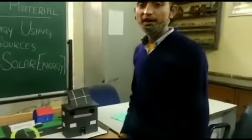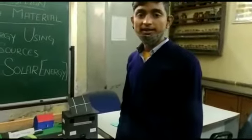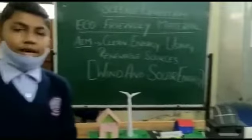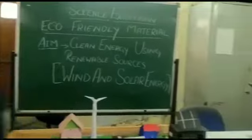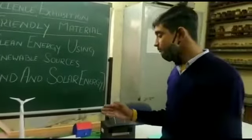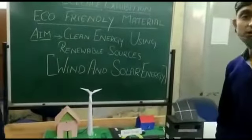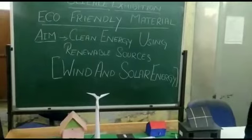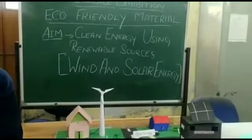Today we are here to tell about a science model with theme: technology and toy. The sub-theme is eco-friendly materials. The aim of making this model is wind energy generation using renewable sources of energy — wind and solar.